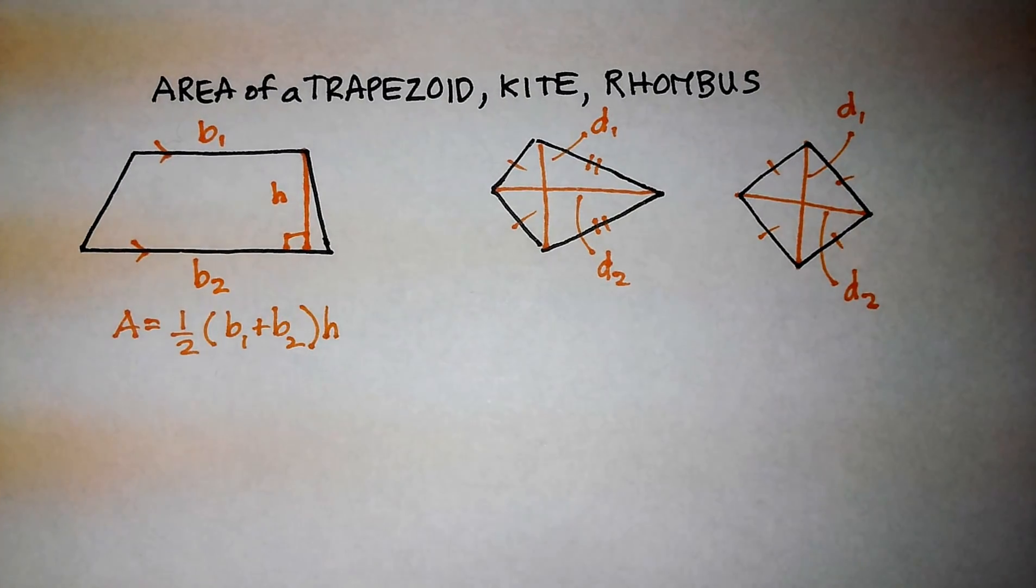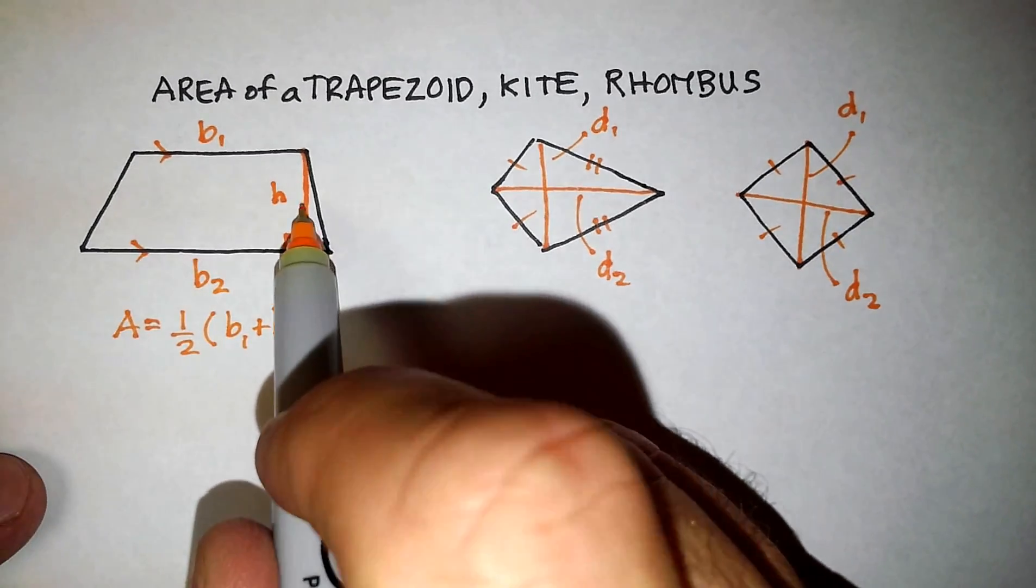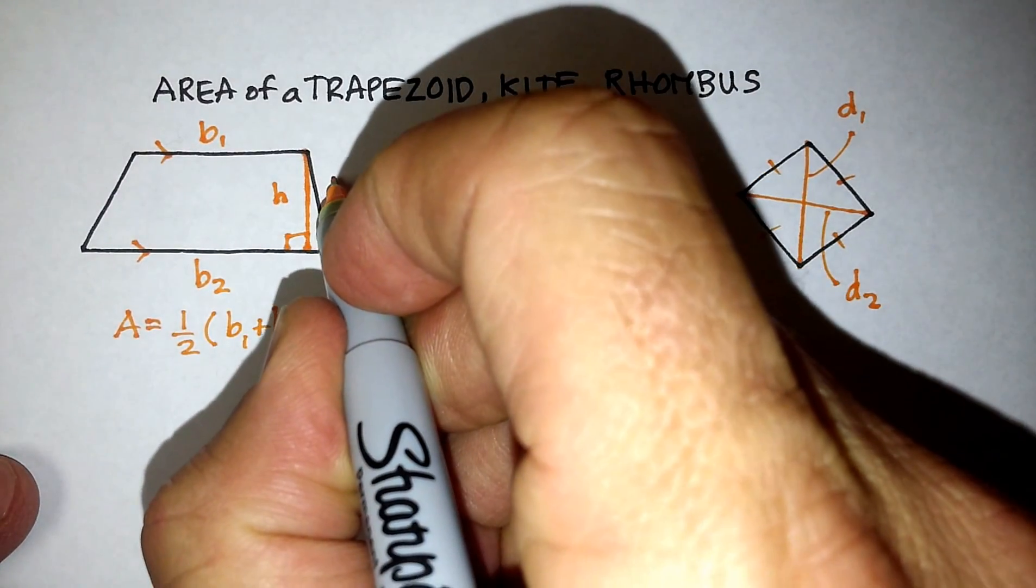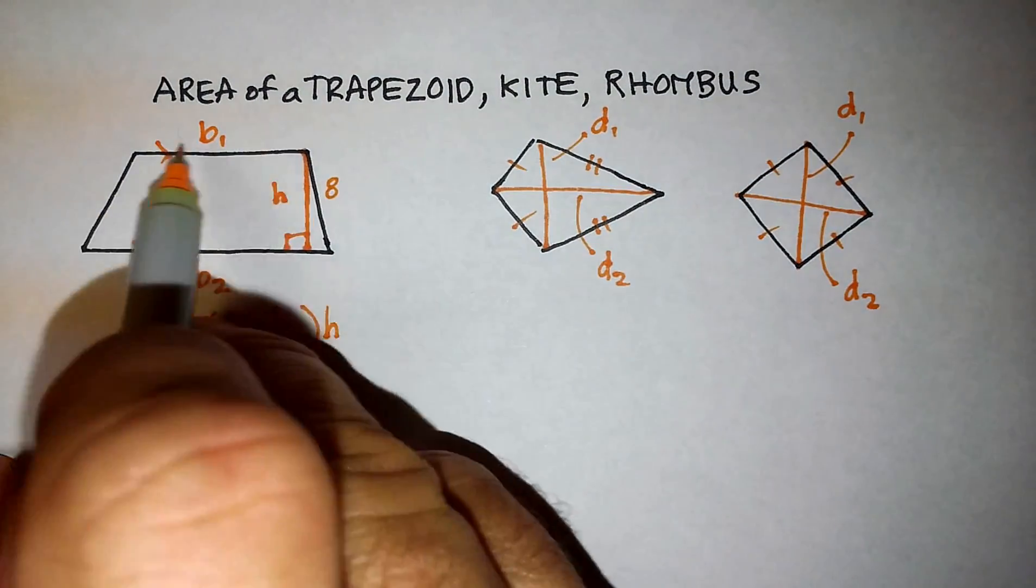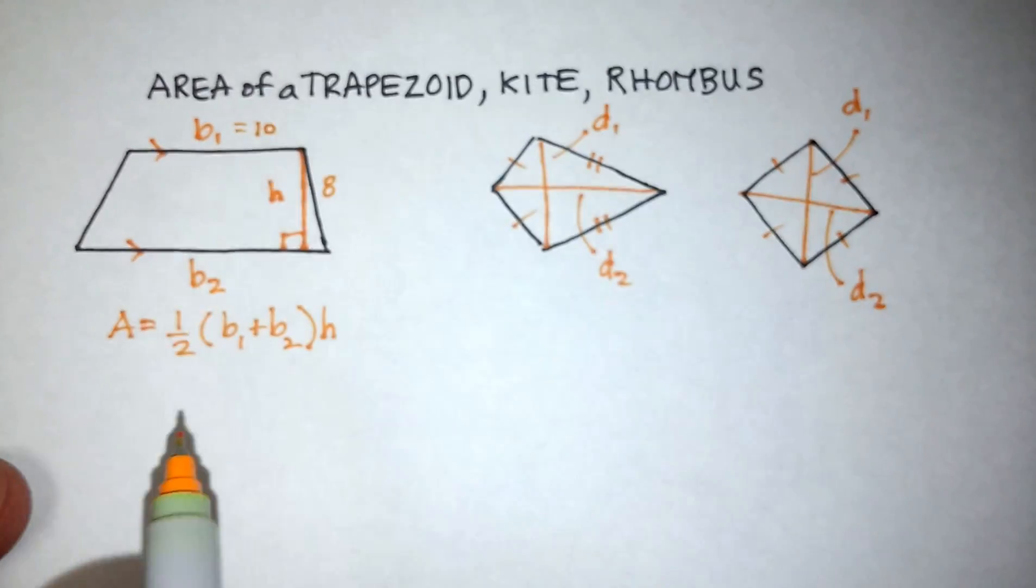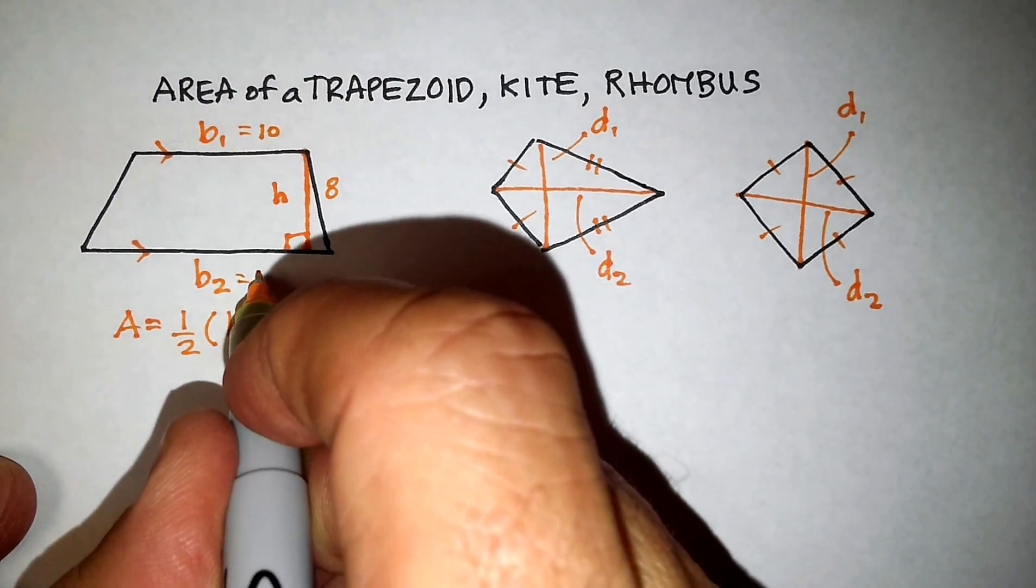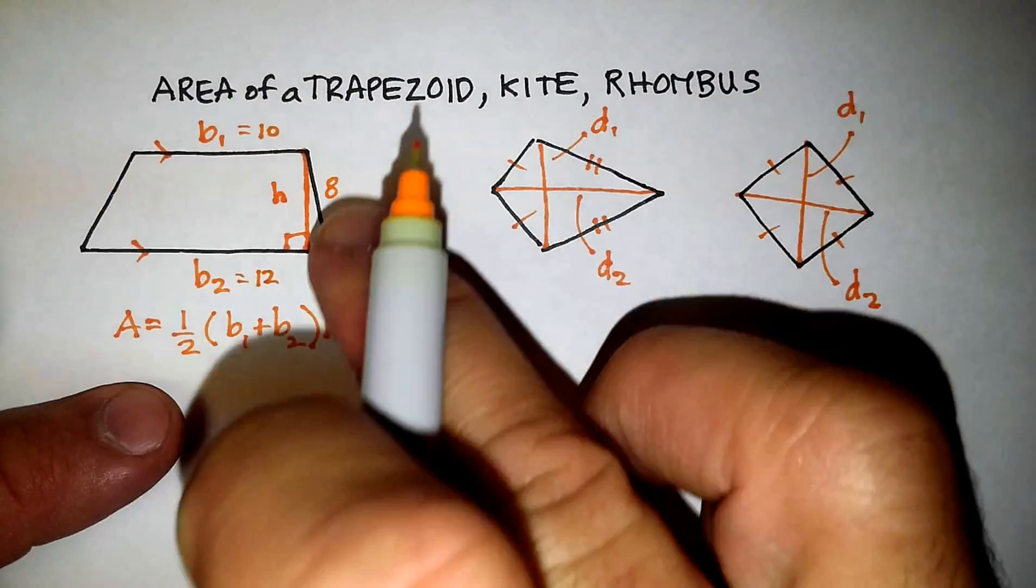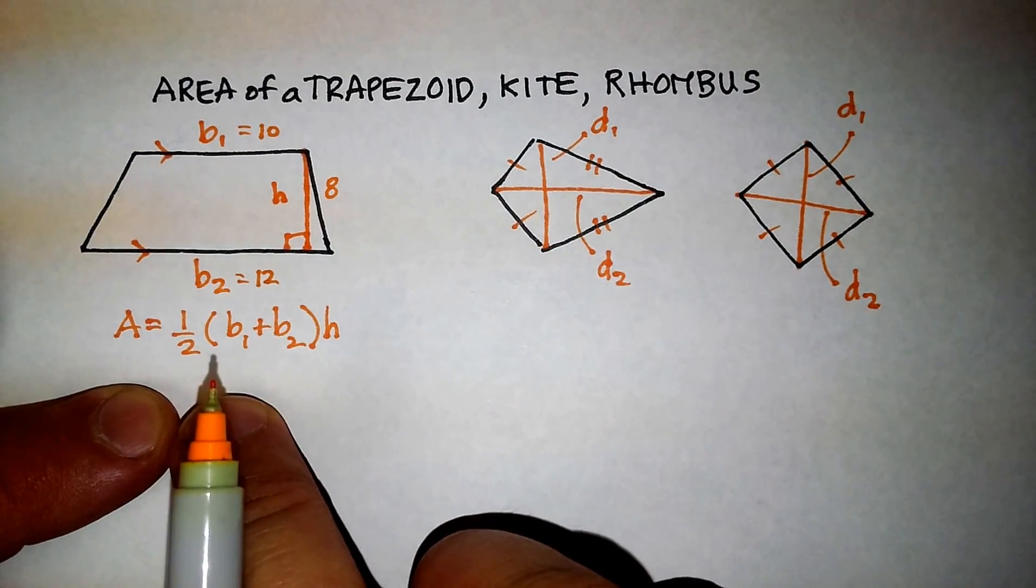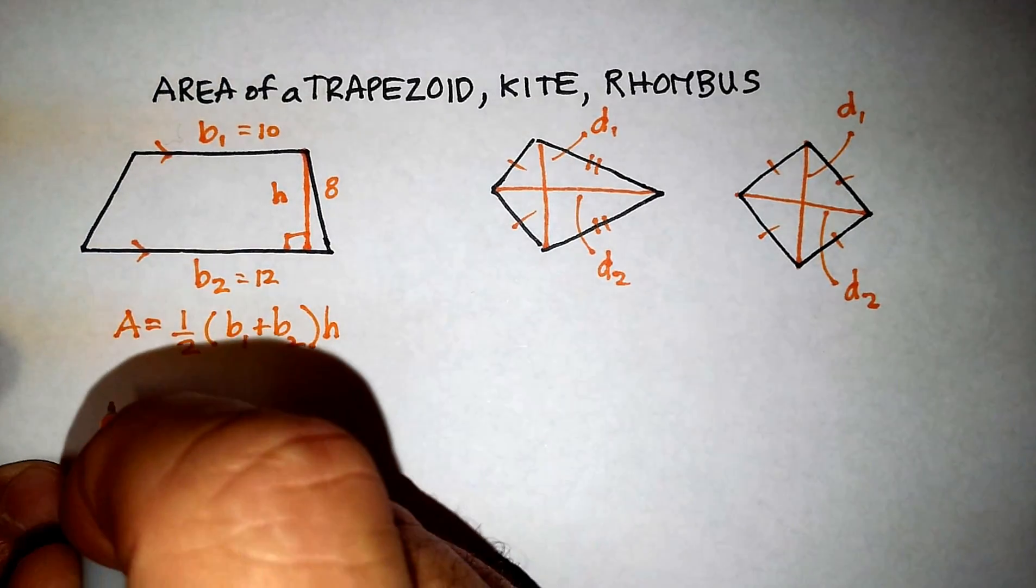So let's make up an example here. Let's assume that this height is something like 8. Let's assume that this base 1 is equal to 10, and let's assume that this base 2 is something like 12. You simply evaluate this particular formula, which means plug in the numbers and solve.